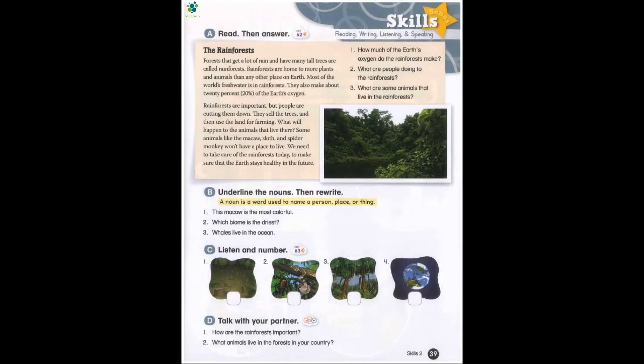Page 39. Skills: Reading, Writing, Listening, and Speaking. A. Read, then answer. The Rainforests. Forests that get a lot of rain and have many tall trees are called rainforests. Rainforests are home to more plants and animals than any other place on Earth. Most of the world's fresh water is in rainforests. They also make about 20% of the Earth's oxygen. Rainforests are important, but people are cutting them down. They sell the trees and then use the land for farming. What will happen to the animals that live there? Some animals, like the macaw, sloth, and spider monkey, won't have a place to live. We need to take care of the rainforests today to make sure that the Earth stays healthy in the future.